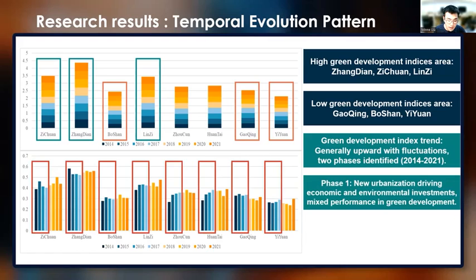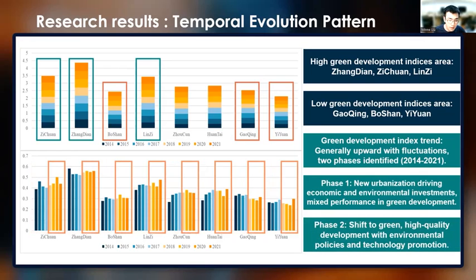In the first phase, urban development was primarily driven by new urbanization construction. Some districts show an upward trend in their indices because the government expanded its efforts in economic development and environmental construction. However, with the energy consumption and environmental pressure brought by high-speed growth, the indices of some regions declined. In the second phase, government policies shifted from high-speed to green and high-quality development. Zibo City enacted a policy for increasing the use of clean energy and reducing high-polluting factories, called the 'three-increases and three-reductions' policy.